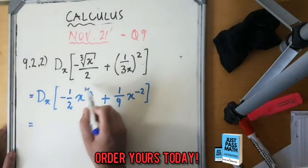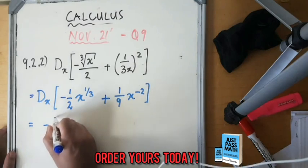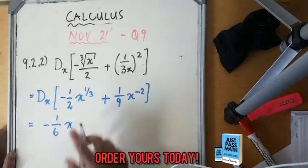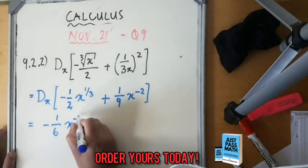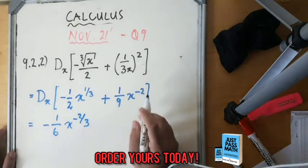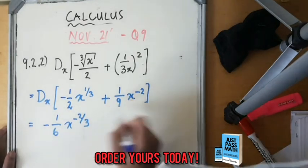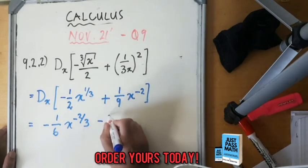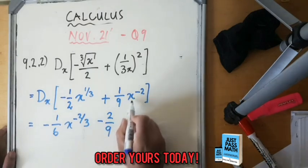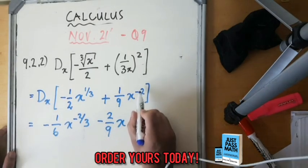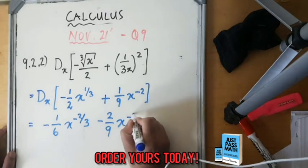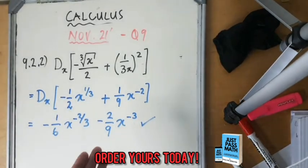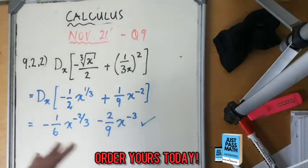Now we differentiate. For the first term: multiply 1/3 by -1/2 giving -1/6, keep x, subtract 1 from the exponent giving -2/3. For the second term: multiply -2 by 1/9 giving -2/9, keep x, subtract 1 giving -3. The final answer is -x^(-2/3)/6 - 2x^(-3)/9.